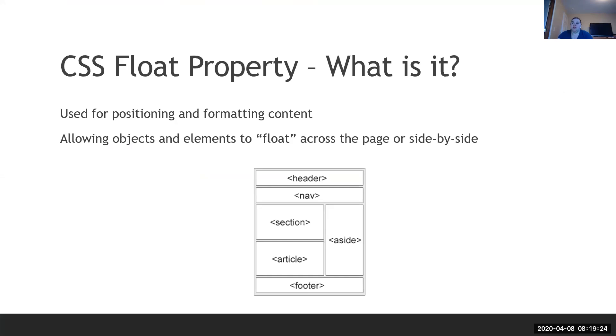The CSS float property is used to position and format content and put things side-by-side specifically. You can have multiple columns — two, three, four, five, six, seven, however many you want — and float things left to right.